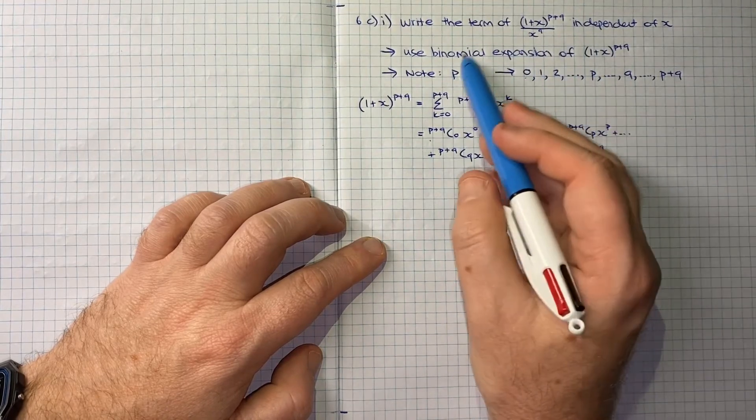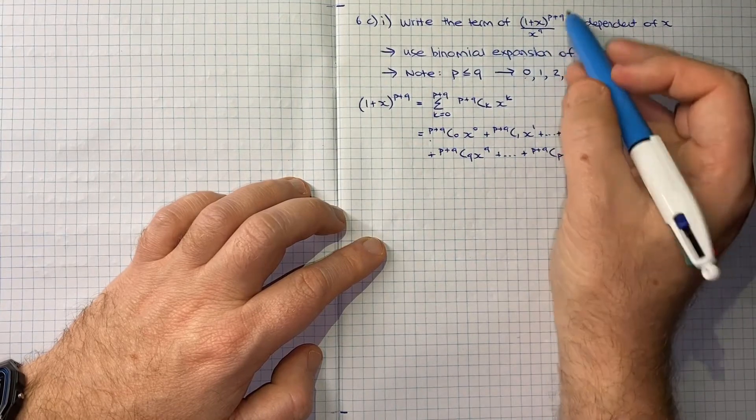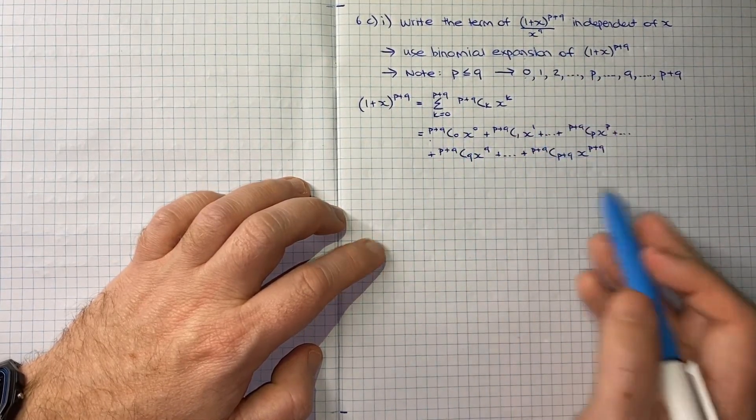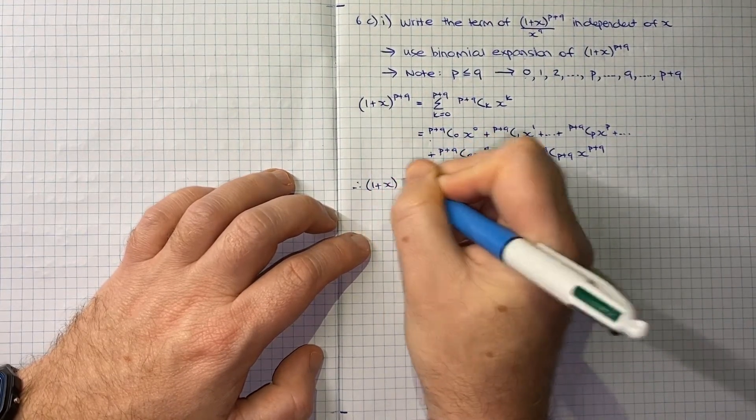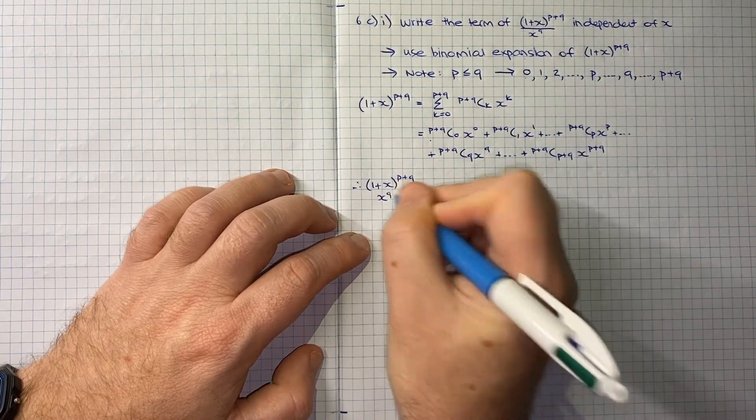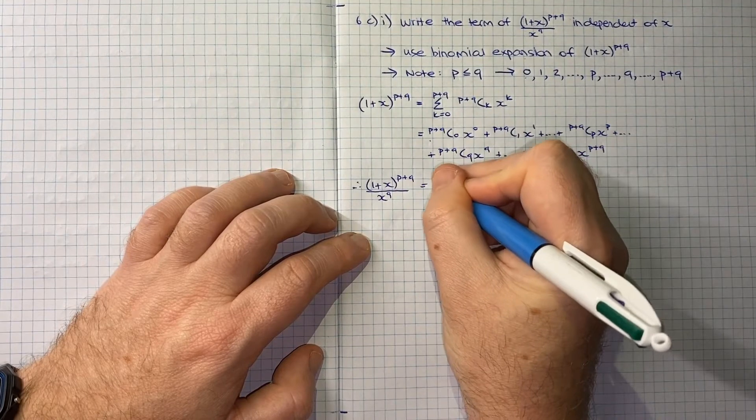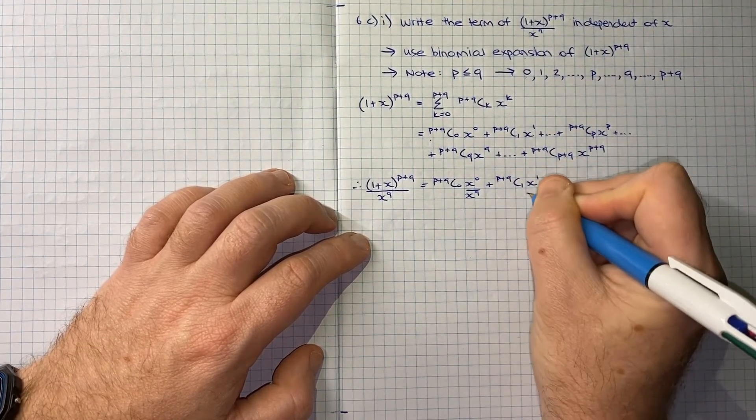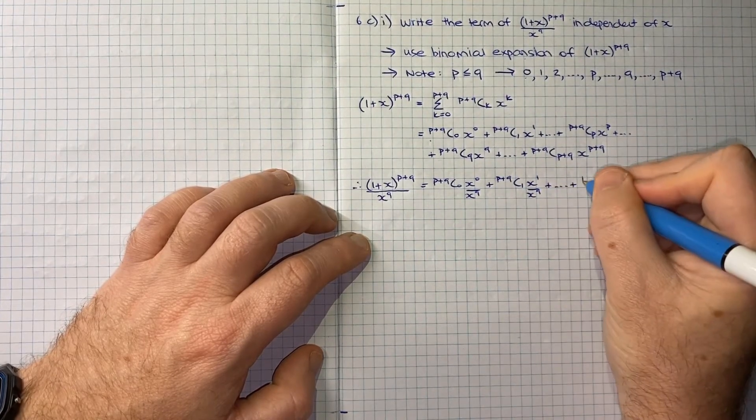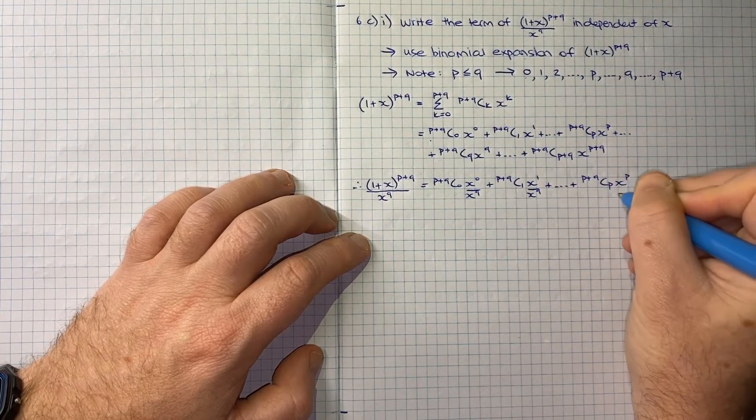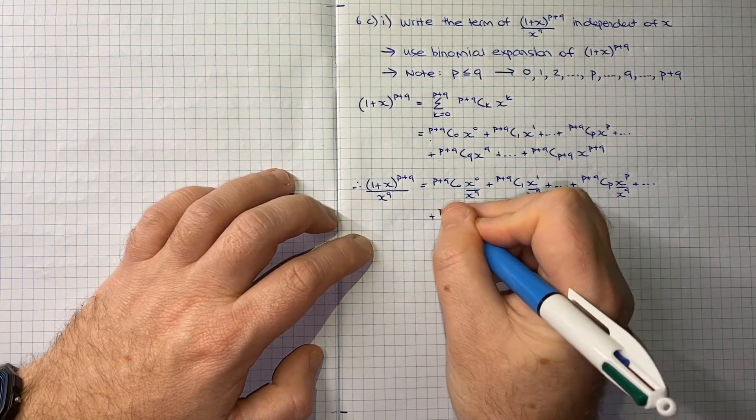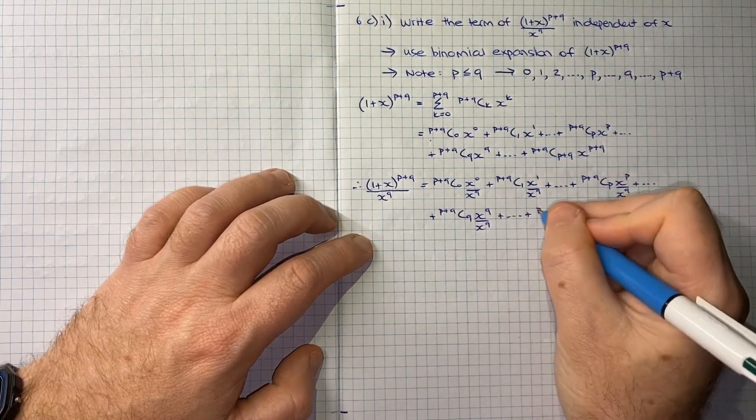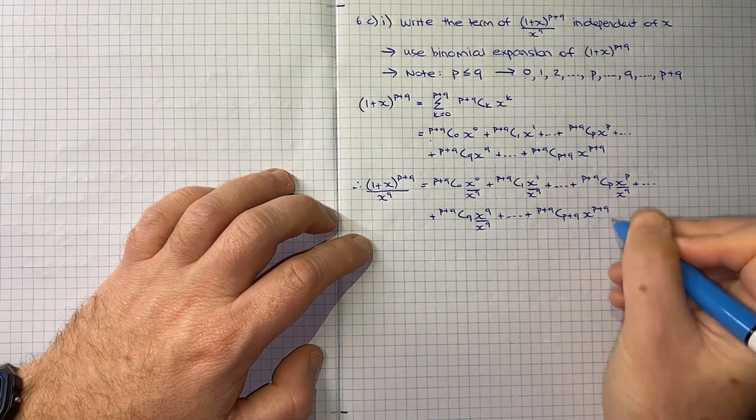But we've got to remember we're actually dealing with this whole term. So now we can put in our denominator and see how dividing by x^q plays out. Therefore, (1+x)^(p+q) over x^q equals (p+q choose 0) x^0 over x^q plus (p+q choose 1) x^1 over x^q, and so on, then we'll have (p+q choose q) x^q over x^q, and then we keep going, and finally we get (p+q choose p+q) x^(p+q) over x^q.